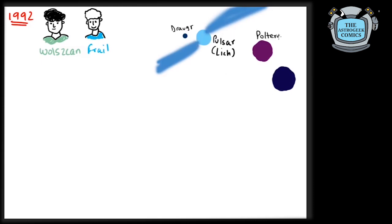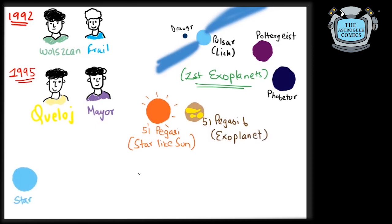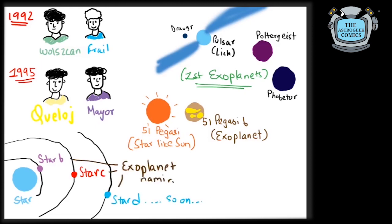You can know more about why these planets were named after demons in the comic number five on my Instagram. The first planet to be discovered around a sun-like star was found in the year 1995 around the star 51 Pegasi by Didier Queloz and Michel Mayor. This planet was named 51 Pegasi B. The exoplanets are named by using lower case alphabets starting from B following the name of the host star. The first planet is denoted by B followed by the second which is denoted by C and so on.